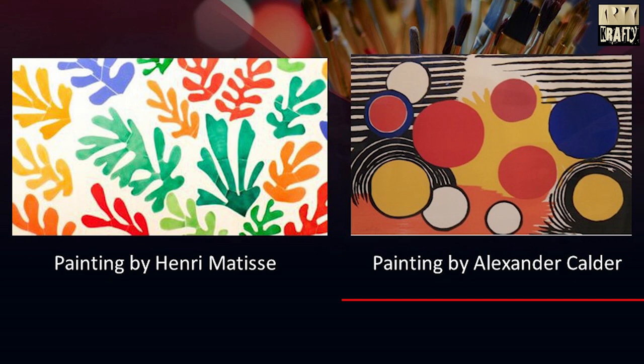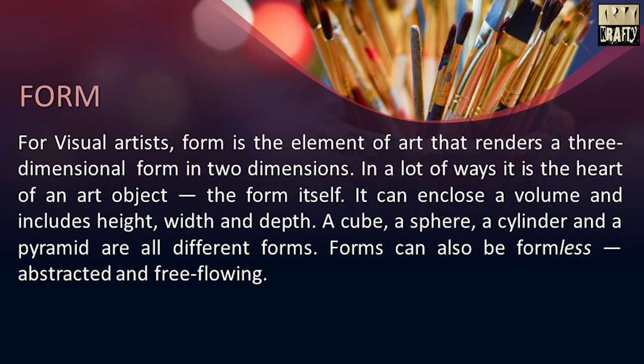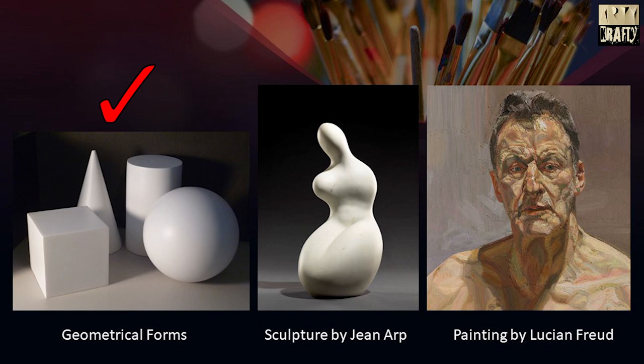Next is form. Form is the element of art that renders a three-dimensional form in two dimensions. A cube, a sphere, a cylinder and a pyramid are all different forms. Forms can also be formless, that is called abstract and free-flowing. Here are some examples. This is the geometrical form. This is the sculpture by Jean Arp, and this is the painting by Lucian Freud.